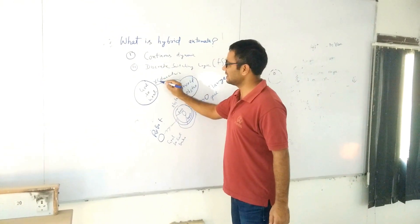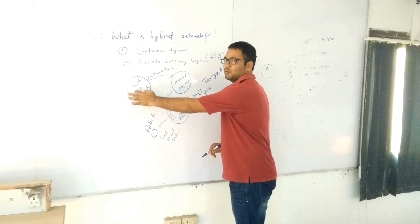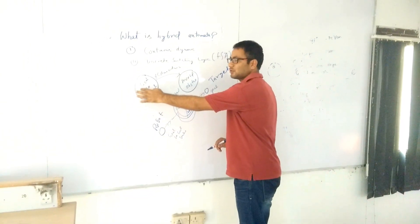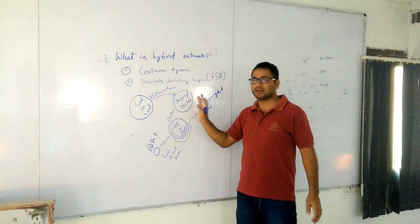If X is less than D max minus D minimum, then I will keep moving in goal-to-goal behavior. I will not switch from this behavior. But once I cross this threshold, then I will move to avoid obstacle.